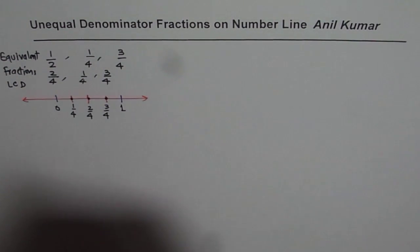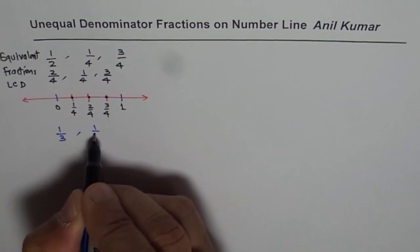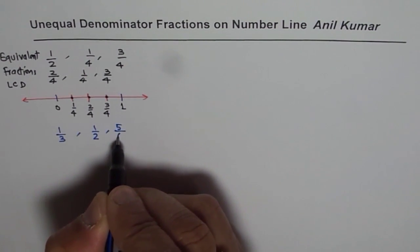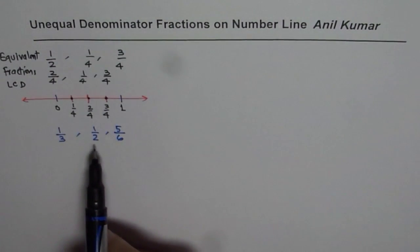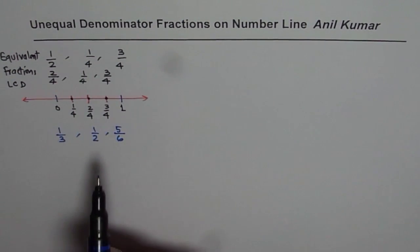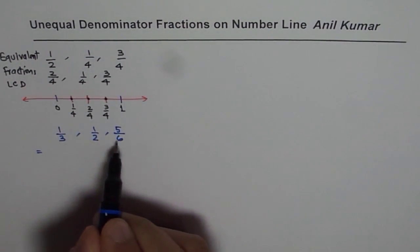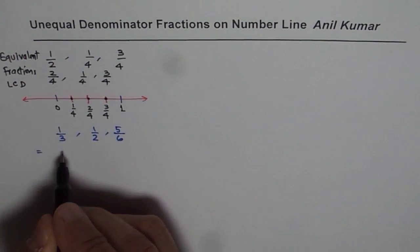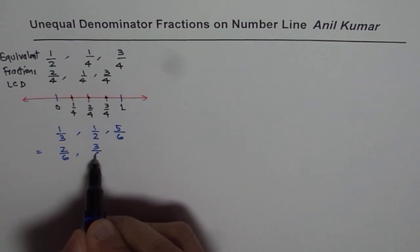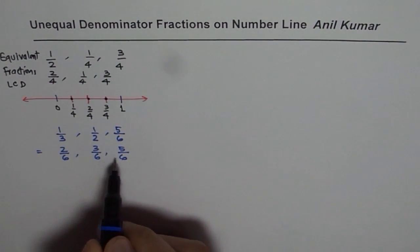Now let us do one more example to practice in a similar fashion. Let us have 1 over 3, 1 over 2, and 5 over 6. These are three fractions with very different denominators. The first step is equivalent fractions. We write them with their lowest common denominator, which is 6. Multiplying 1/3 by 2, we get 2 over 6. Half, multiplied by 3, gives us 3 over 6. And we already have 5 over 6. Now each fraction is a multiple of 1 over 6.